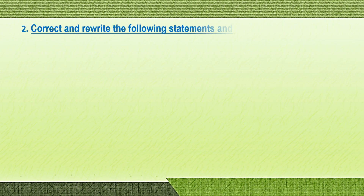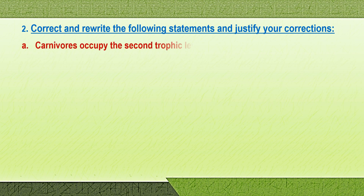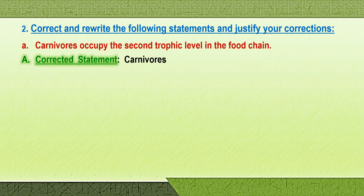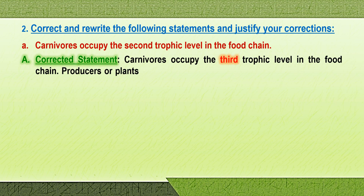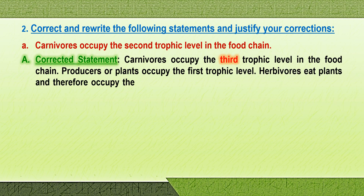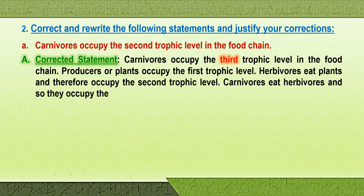Question two: correct and rewrite the following statements, and justify your corrections. You are given a wrong statement, you must rewrite it and explain why it is wrong. First one — carnivores occupy the second trophic level in the food chain. Corrected statement: carnivores occupy the third trophic level in the food chain. Producers or plants occupy the first trophic level, and herbivores eat plants and therefore occupy the second trophic level.